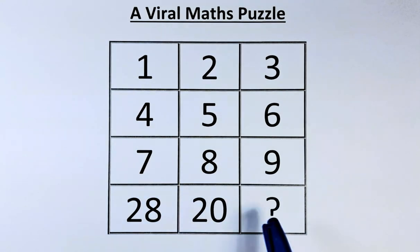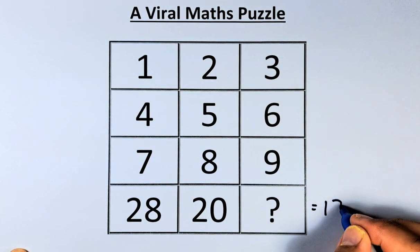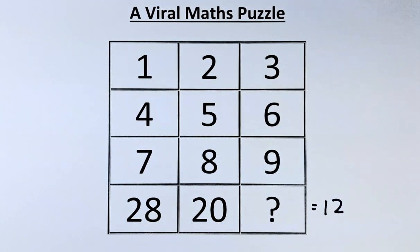And the average of 28 and the number is going to be 20. So the first answer is going to be 12 because 12 plus 28 is 40. 40 divided by 2, that will give us 20. So if you get 12, give yourself a clap.